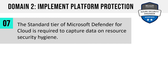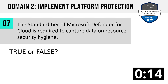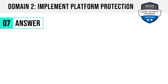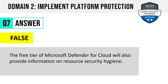Number 7. The standard tier of Microsoft Defender for Cloud is required to capture data on resource security hygiene. True or false? The answer is false. The free tier of Defender for Cloud will also provide information on resource security hygiene. It's when we get into intelligent features — those that formerly carried the label advanced threat protection — and hybrid features such as managing on-premises VMs that we need to move up to the standard tier. If there's intelligence or machine learning involved, or it's a hybrid function, that's where you're thinking about the standard tier.